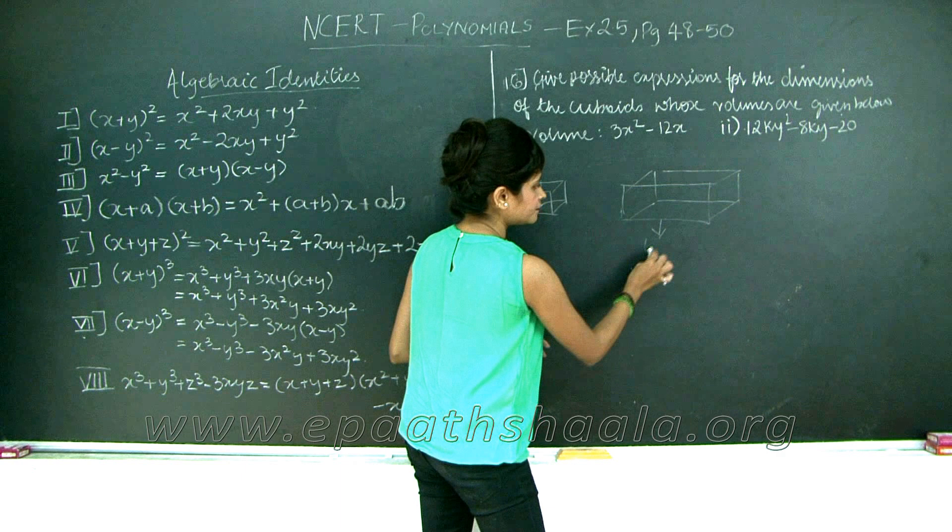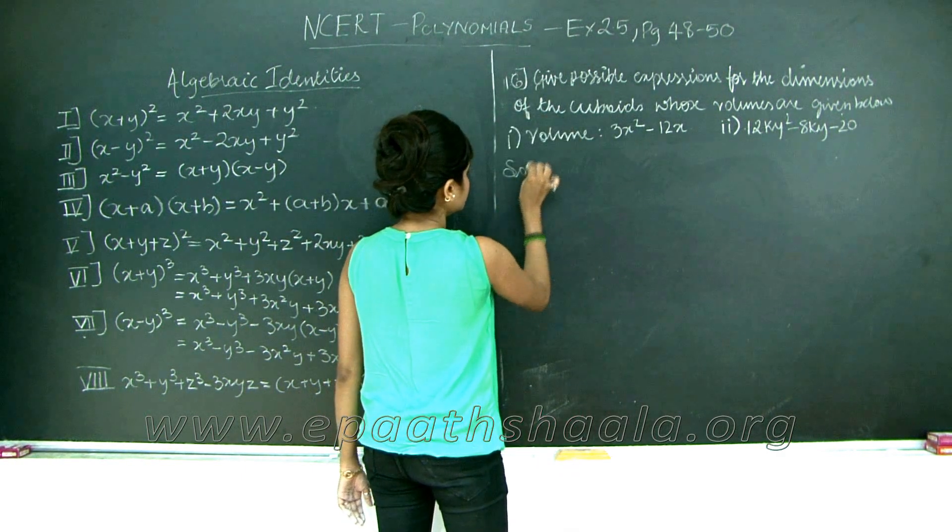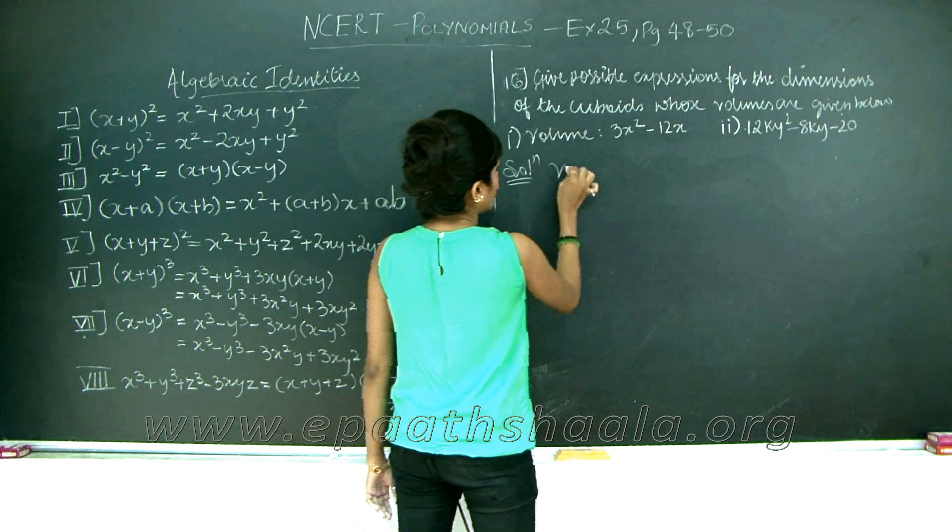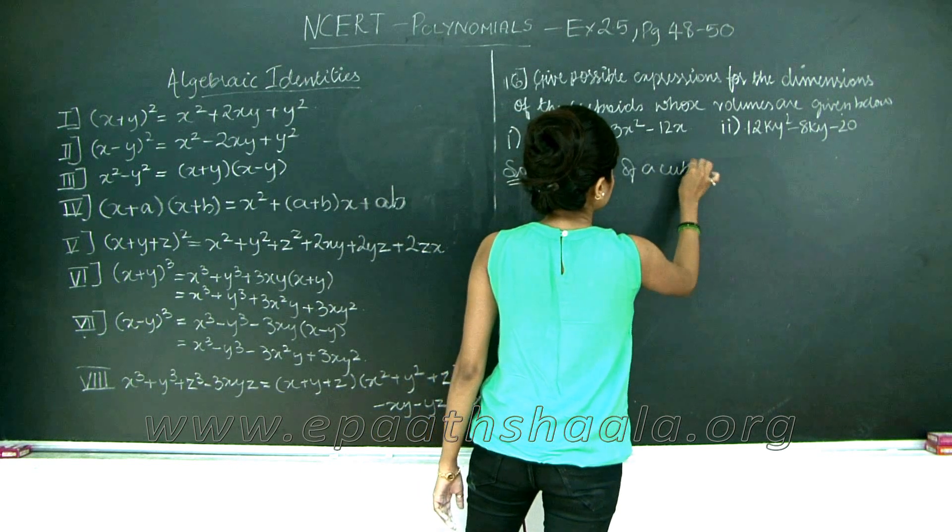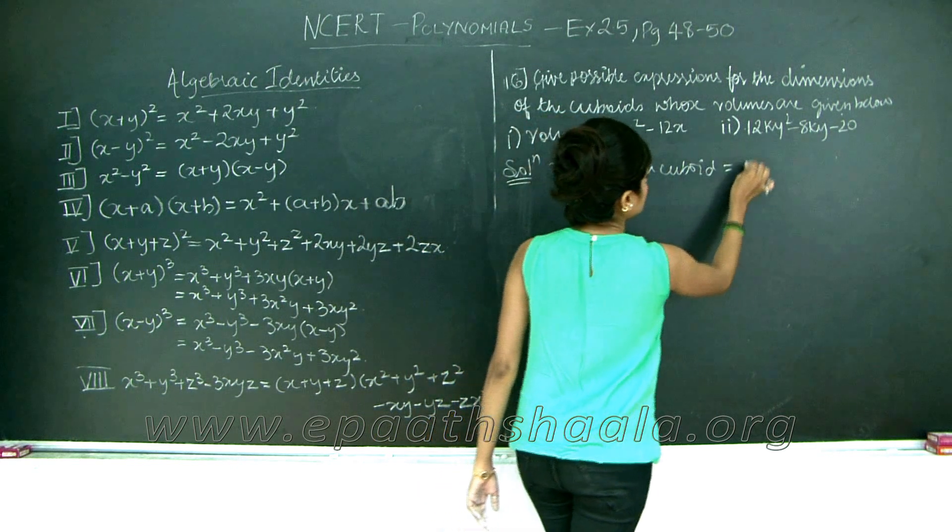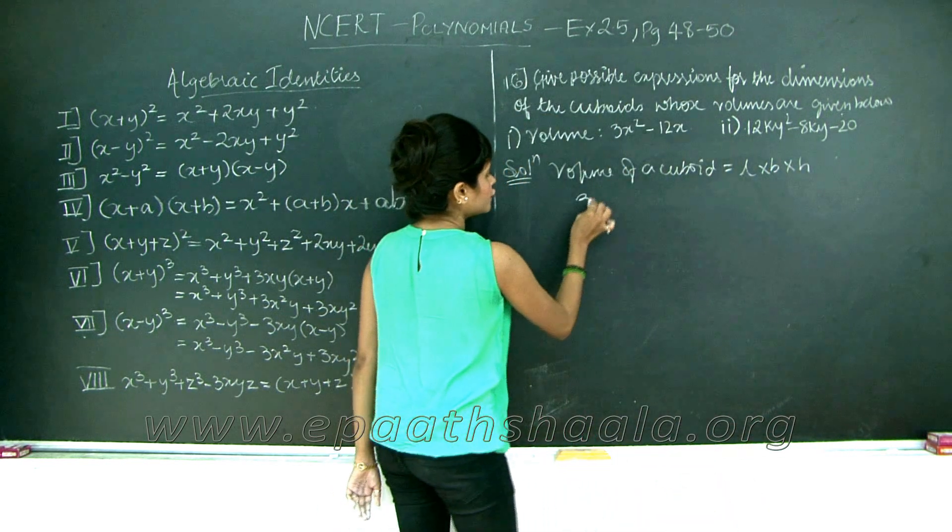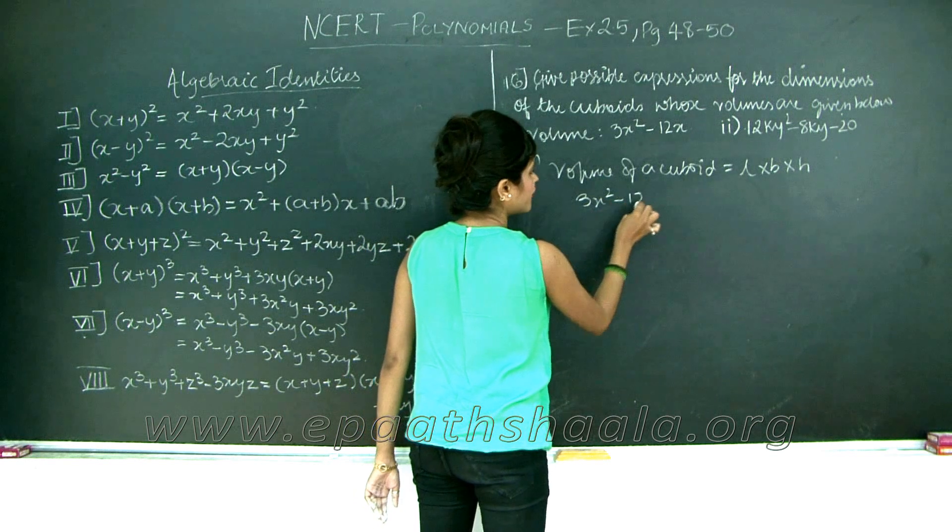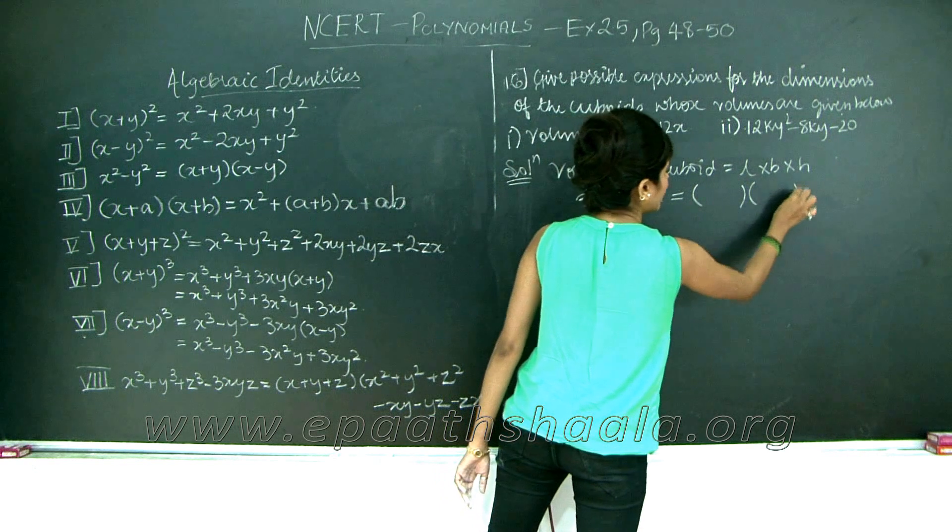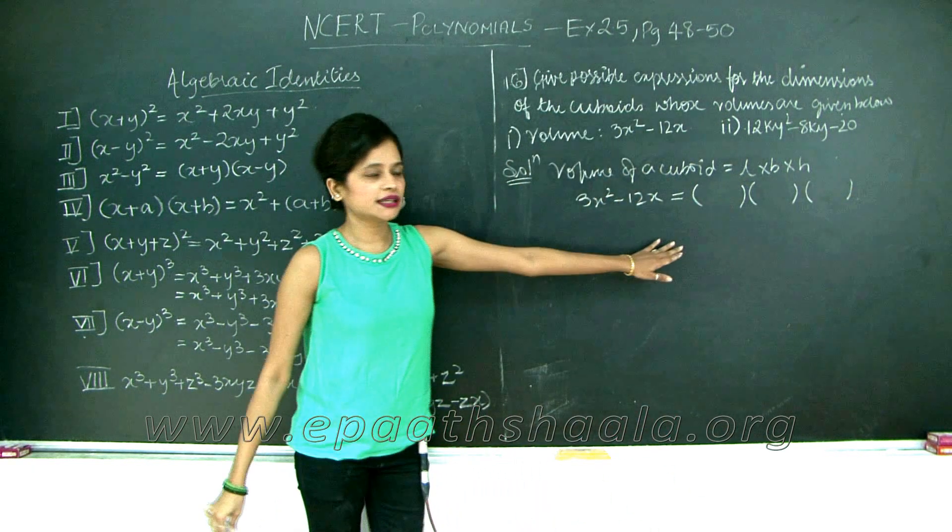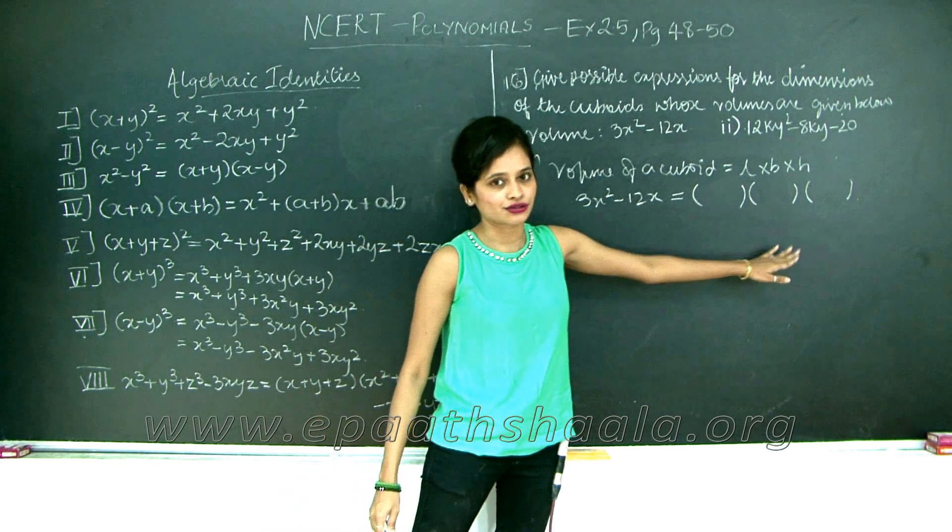It will have length, breadth, and height. My first question: volume of a cuboid is equal to length into breadth into height. What is my volume? 3x squared minus 12x. It can be split into three factors: one for length, one for breadth, and one for height. Now I do not know these terms. I am going to factorize 3x squared minus 12x in order to find the dimensions.